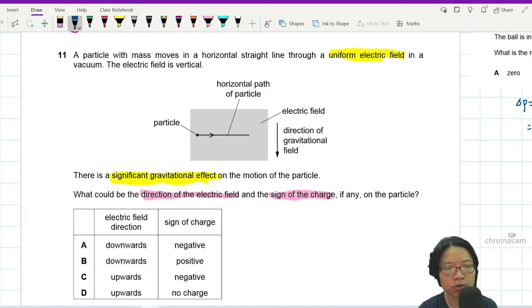Okay, step one, I notice the particle is moving on a straight line. Now if the particle is moving in a straight line, then I need to make sure that whatever forces acting on the particle, they will cancel out. If not, the particle will either turn upward or turn downward.